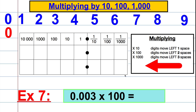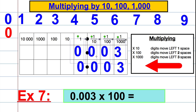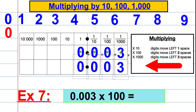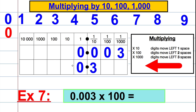One more: 0.003 multiplied by 100. That's 0 ones, 0 tenths, 0 hundredths and 3 thousandths. We're multiplying by 100, so the digits shift two places to the left: 1 and 2. The answer gives us 0 hundredths, 0 tenths, 0 ones and 3 tenths. We drop the unnecessary zeros, and following the convention of leaving the zero before a decimal point, the answer is 0.3.